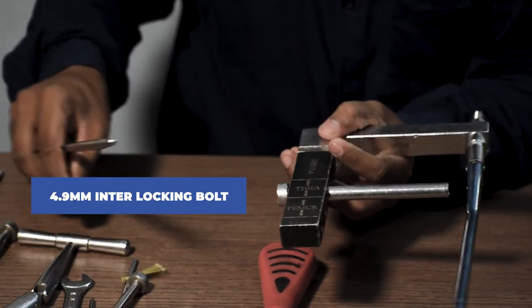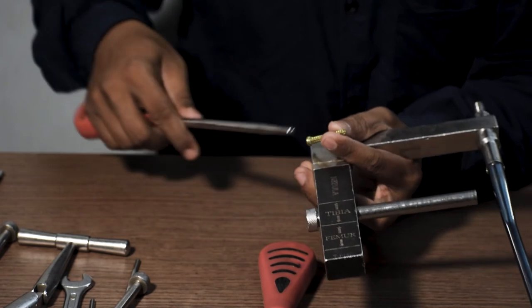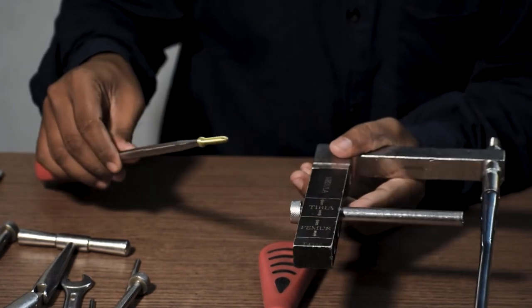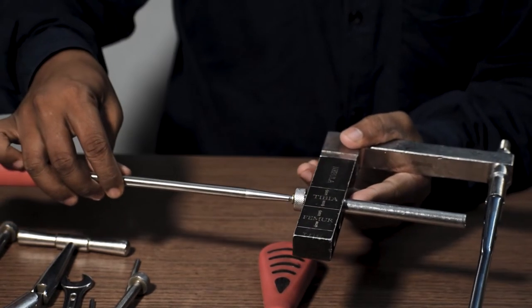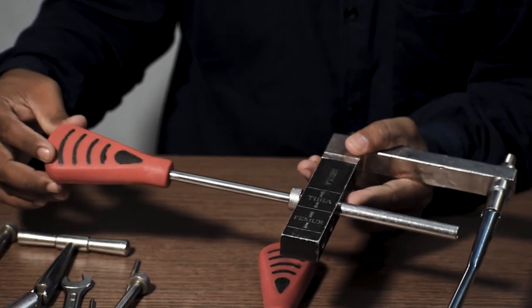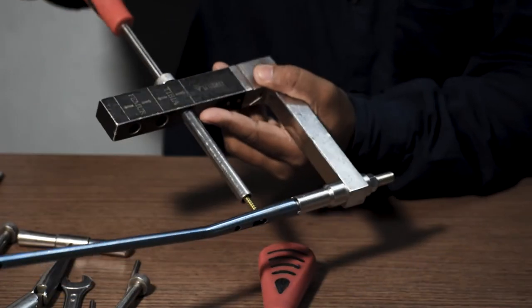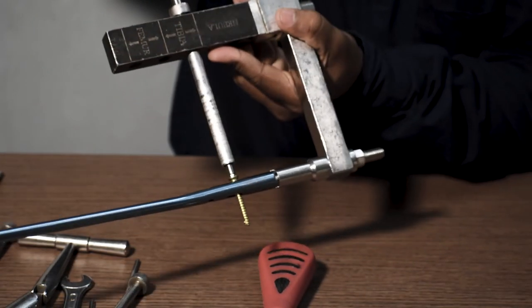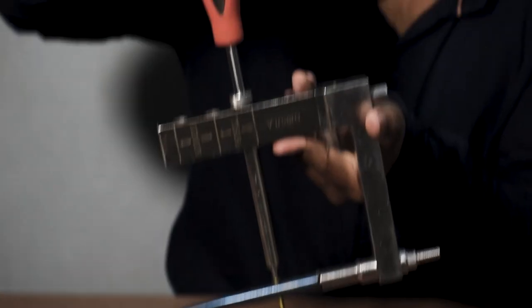A 200 mm screwdriver is used in order to fix the interlocking bolt in the proximal part of the nail which is connected to the jig. A 4.9 mm interlocking bolt is used. The entry is done through the protection sleeve using the 200 mm screwdriver and gets locked in this hole.